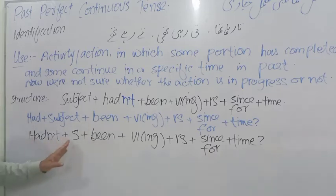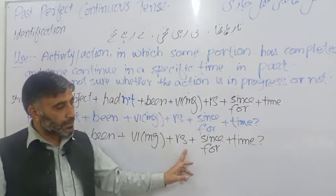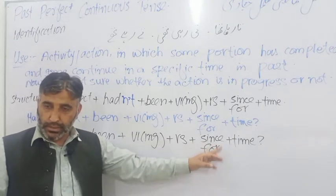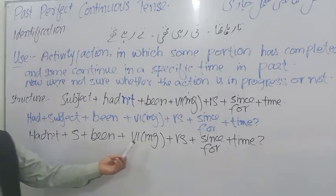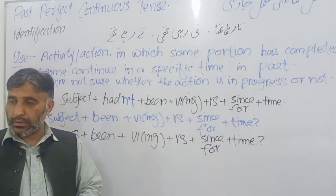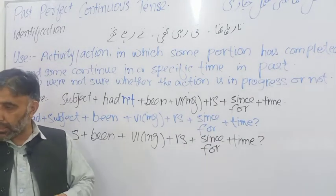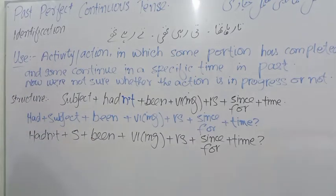And if you have a negative interrogative question, so hadn't comes first, then subject, then been, then first form plus ing, plus rest of the sentence, plus sense or for, plus time. For example, hadn't you been studying at madrasa for seven years in 2020? Yes I had, or no I hadn't.